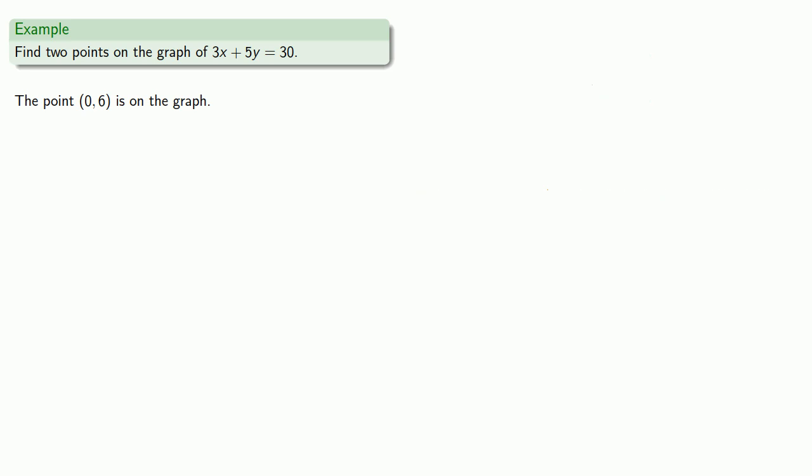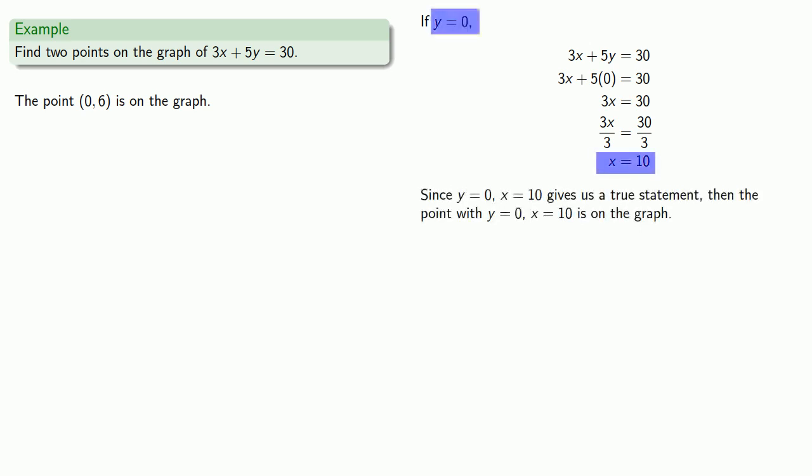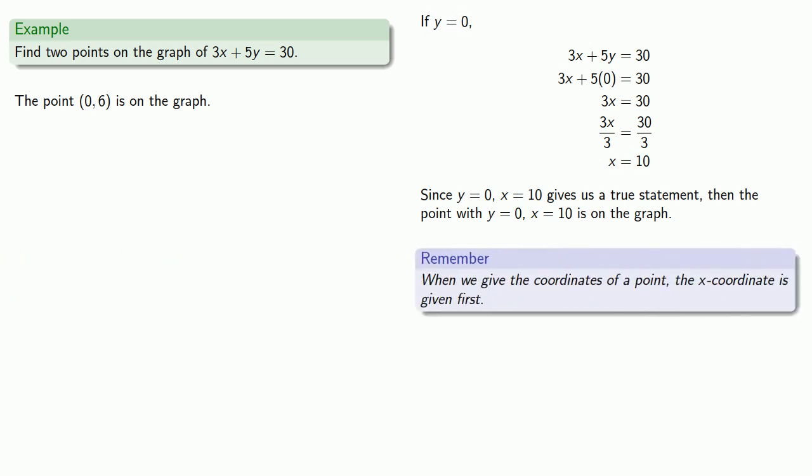Now we could pick a different value for x, but we already tried that, and we didn't like the equation that we got. So let's try y equal to 0. If y equals 0, equals means replaceable, so we'll replace y with 0 everywhere we see it. And the resulting equation is easy to solve. We'll solve this for x and get... And since y equals 0, x equals 10 gives us a true statement, then the point with y equals 0, x equals 10 is on the graph. Now remember, when we give the coordinates of a point, the x-coordinate is given first, and so that means the point (10, 0) is on the graph.